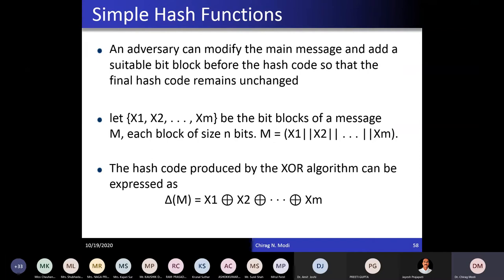How can an adversary break the XOR hash algorithm? An adversary can modify the main message and add a suitable bit block so that the final hash code remains unchanged. For example, X1 to XM are the bit blocks of a message, each of size N bits. The hash is X1 XOR X2 XOR ... XOR XM = ΔM. An adversary can create a forgery by replacing X1 to X(M-1) with any desired values Y1 to Y(M-1), then XOR these with the original hash ΔM to derive YM, so the forged message Y1 to YM produces the same hash code.